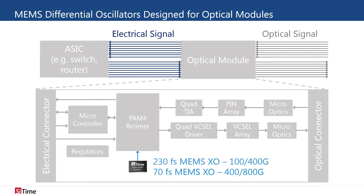To address the growing number of 400 gigabit networks, SciTime is proud to offer the Atena family of differential oscillators. These oscillators are a new milestone in MEMS timing technology with only 70 femtoseconds of RMS phase jitter.